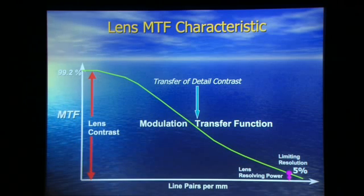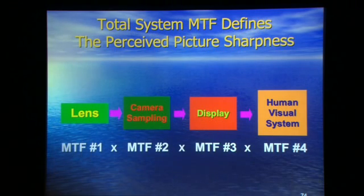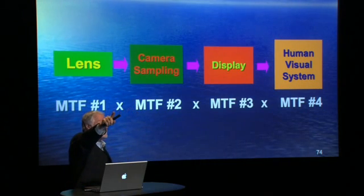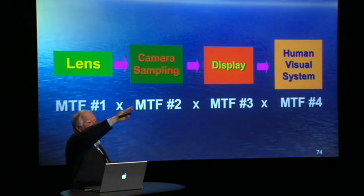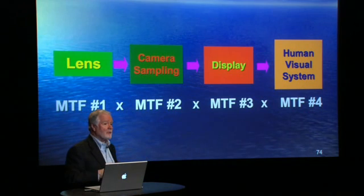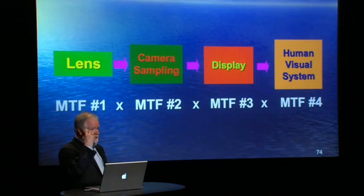That curve is far more important than you might have appreciated. And it's one of the reasons there's an enormous confusion when we talk about resolution, sharpness, and what we see. Because what you see is the MTF of the lens multiplied by the MTF of the camera. This projector we're looking at — it's a sample device, it's got optics in it, it's got a curve. All of these curves, and then finally your eye and brain has the most complex curve of them all. So what we actually see is the multiplication of all of these.